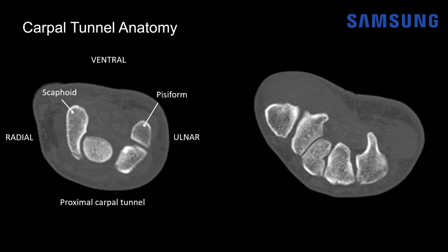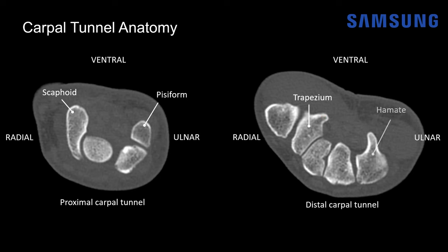When we move a bit more distally in the carpal tunnel, again this is the ventral aspect. On the radial side we have the trapezium bone, and this small outcropping is the trapezium tubercle. On the ulnar aspect we have the hamate bone, and this curvilinear part of the bone is known as the hook of the hamate. This anatomy correlates well to the ultrasound appearance.